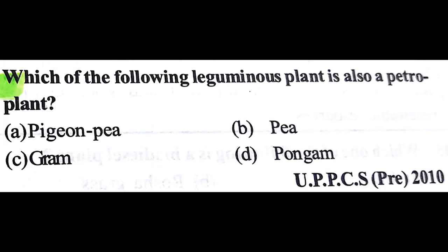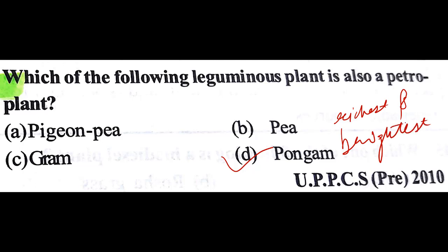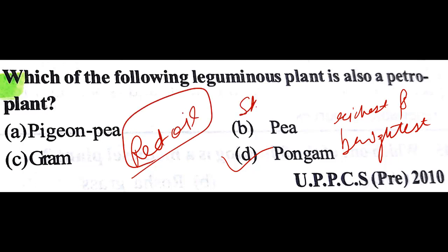Which of the following leguminous plants is also a petro plant? The answer is D: pongum. The pongum tree is also known as the richest and brightest tree in the region because we obtain a kind of red oil from it, which is used for curing some skin diseases and also used as a biodiesel.